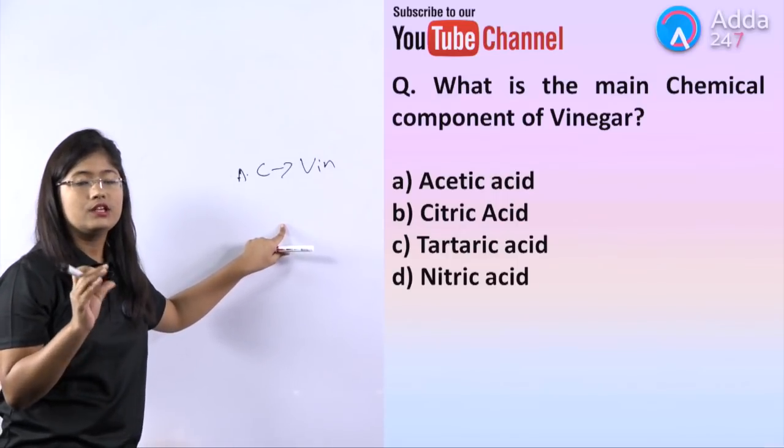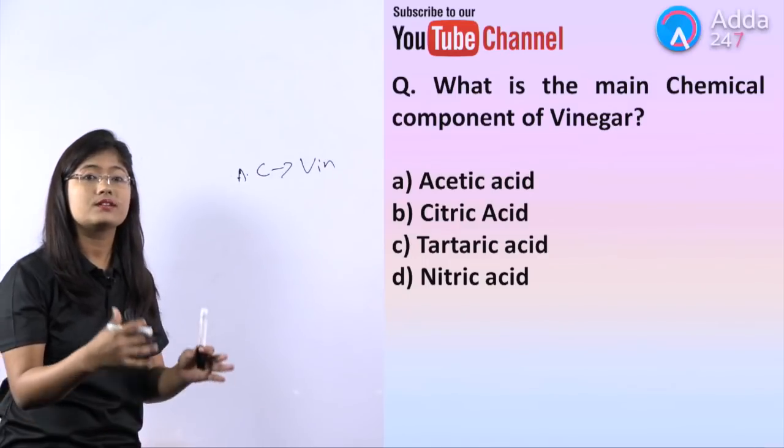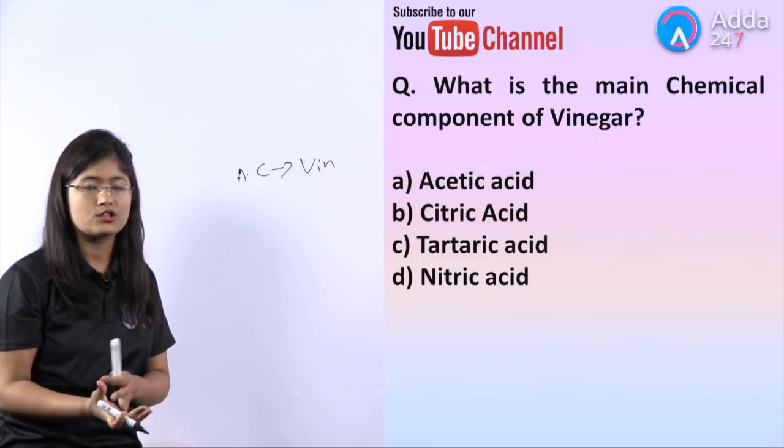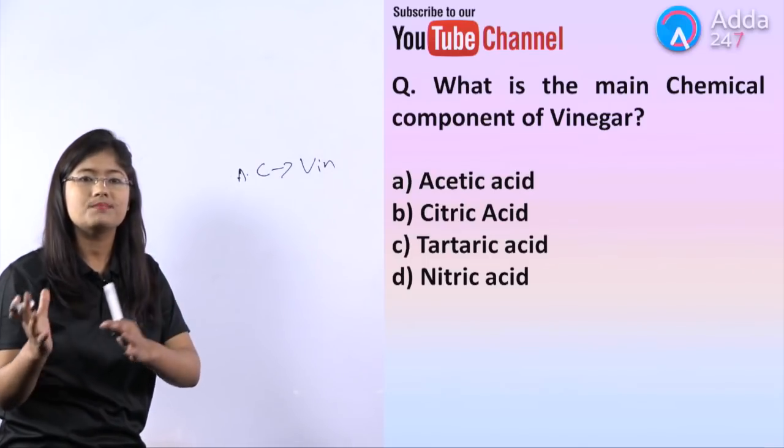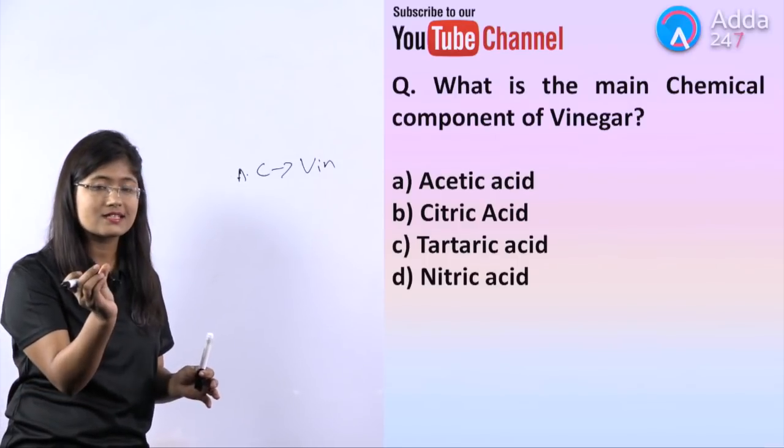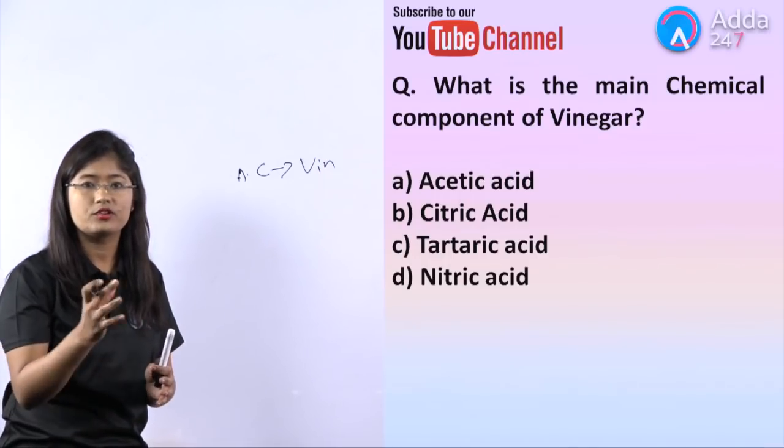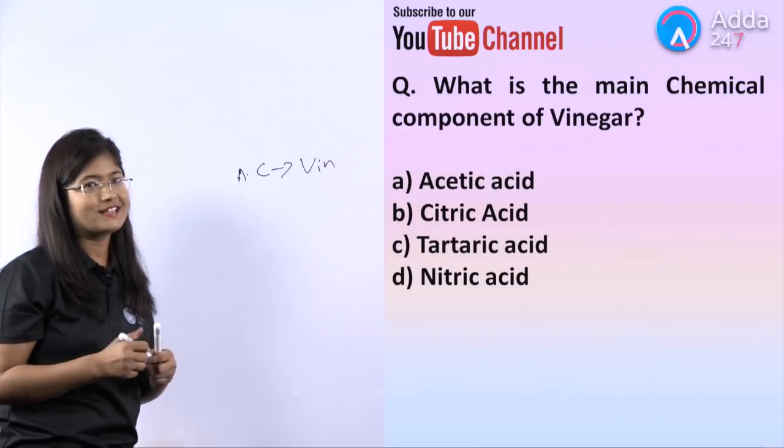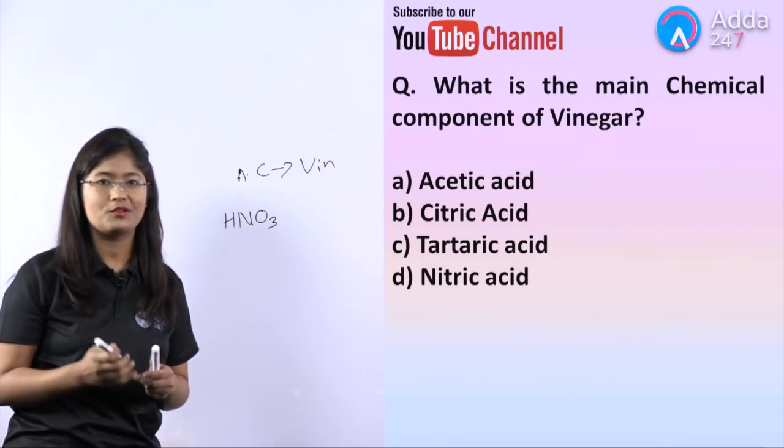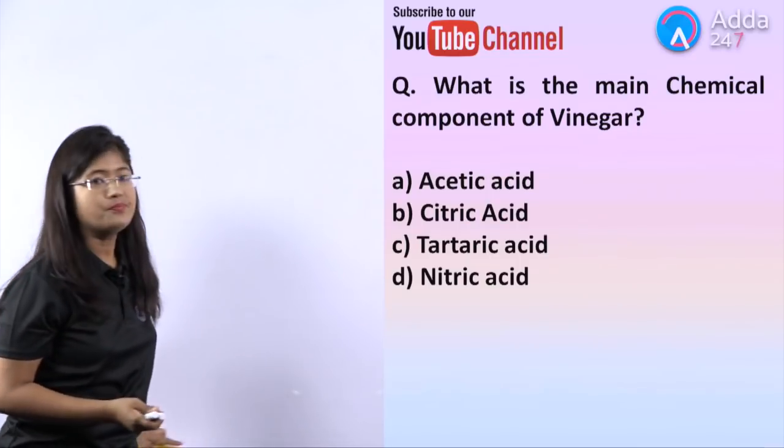For citric acid, you find it in sour fruits, for example lemon. If you talk about tartaric acid, it's found in tamarind. Aqua regia is HCl plus HNO3, used for purification of gold and silver. Let us move on to the next question.